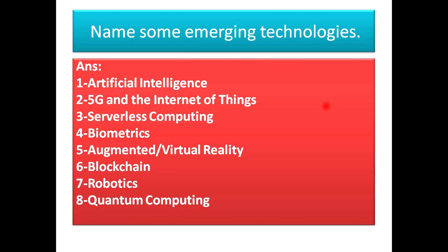This is not in the book but important, so that is why I have written: Name some emerging technologies. Artificial intelligence, 5G and internet of things, serverless computing, biometric, augmented reality, virtual reality, blockchain, robotics, and quantum computers.